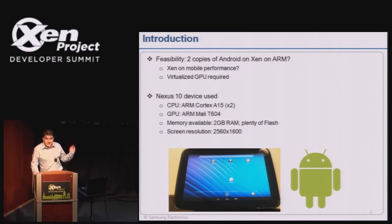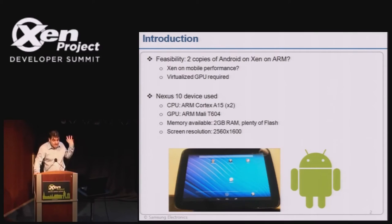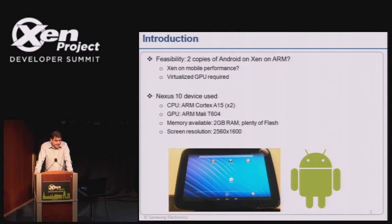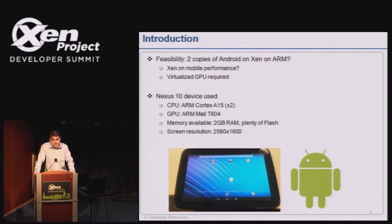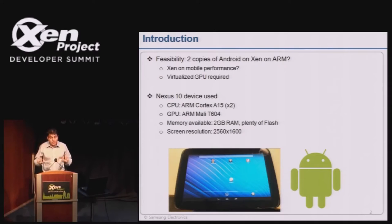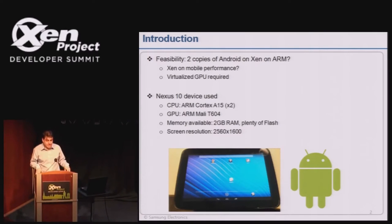The Nexus 10 device we used is commodity, commercially available, unmodified hardware — you can just buy it from Google Play. It has two Cortex-A15s, so it's running Xen on ARM. The GPU is a Mali T604, an ARM GPU. The ARM ecosystem has many different GPU vendors, so it's important that we support all GPU vendors for us to be successful.